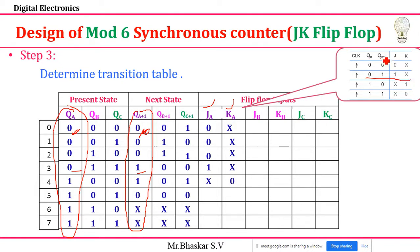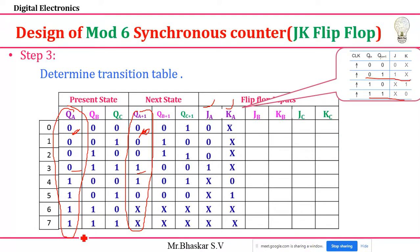Continuing to fill the table: for QA=1, QA+1=1, JA=x0; for QA=1, QA+1=0, JA=x1. For the unused states, all J and K values are x. Similarly, fill JB, KB using QB and QB+1, and JC, KC using QC and QC+1. I'll give you time to fill in JB, KB and JC, KC.